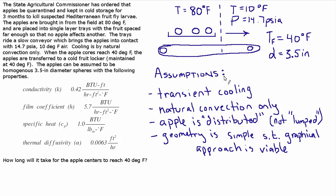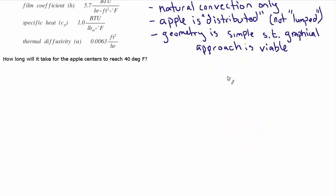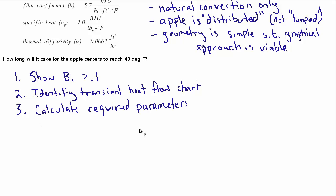With those assumptions let's outline the steps. First we're going to compute the BO number and show that it is greater than 0.1. Then we'll identify the transient heat flow chart that we want to use. Then we'll calculate the parameters we need to use that chart. Then we'll find the modified Fourier number on the chart. And lastly that will allow us to solve for T which is the time it takes for the apple centers to reach 40 degrees Fahrenheit.